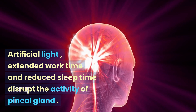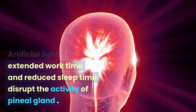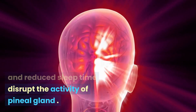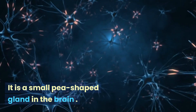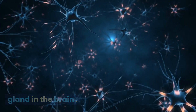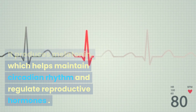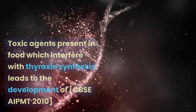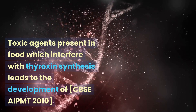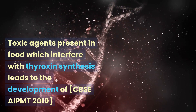Artificial light, extended work time and reduced sleep time disrupt the activity of the pineal gland. It is a small pea-shaped gland in the brain. It produces melatonin, which helps maintain circadian rhythm and regulate reproductive hormones.